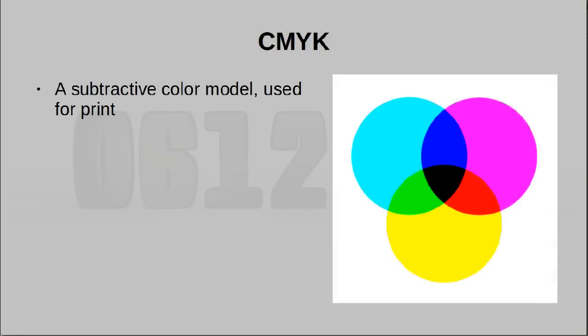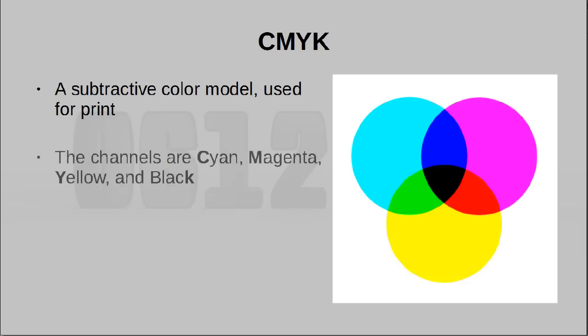Let us now move on to CMYK — four letters, meaning we are representing color with four different channels. CMYK is a subtractive color model and it is used in print. If you've looked at the colors in a printer, you'll notice they are cyan, magenta, yellow, and black — and that is precisely what CMYK stands for. The reason we have four colors instead of three is that it makes a lot more sense to have a dedicated black ink rather than synthesizing black using the other three colors.